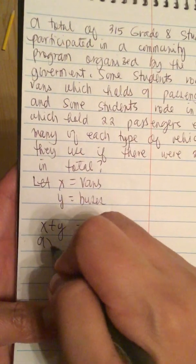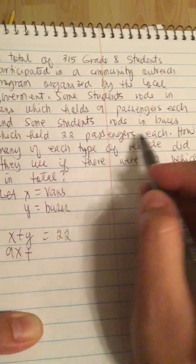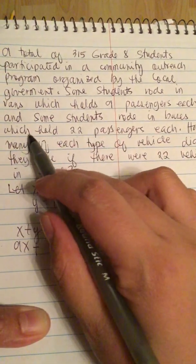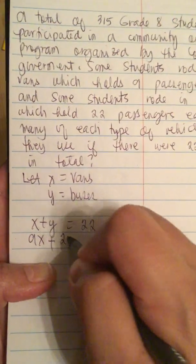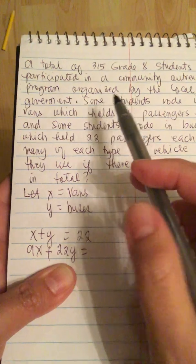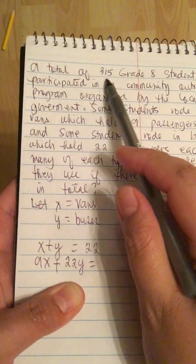And they told us that each van holds 9 passengers. So that means 9x plus the buses hold 22 passengers. So 22y is equal to the total number of students, 315.